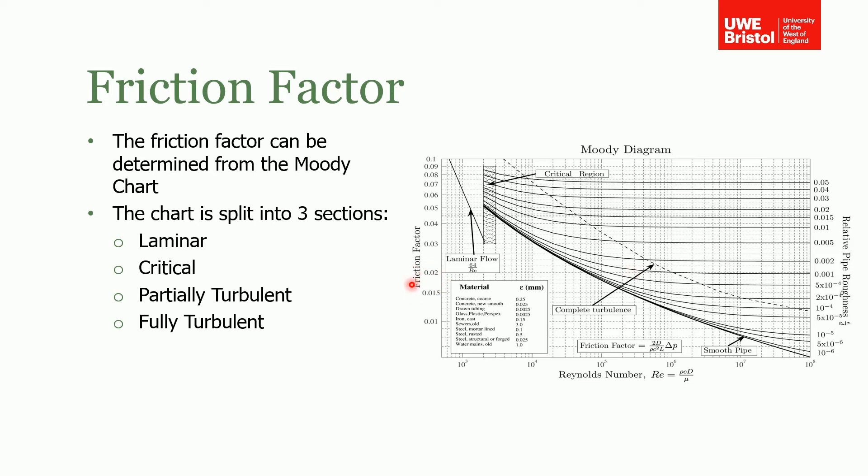This chart is split up into three or four sections depending on how you count them. You've got your laminar region, your critical regime, and your turbulent region, which is split up into a partially and a fully turbulent region as well. I'll just talk about these in turn.